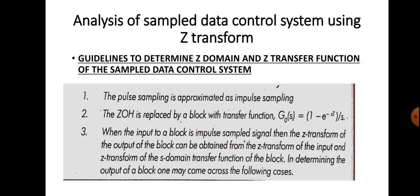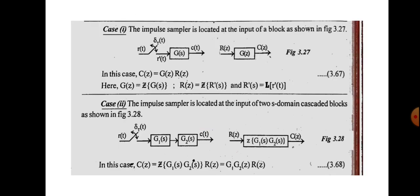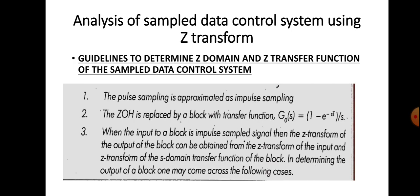This step will be clear when we go through three cases. The third guideline says that if the input is a sampled version, then the output of the block will be the product of the Z-transform of the sampled input and the Z-transform of the block transfer function. When the input to the block is an impulse-sampled signal, the Z-transform of the output can be obtained from the Z-transform of the input and the Z-transform of the s-domain transfer function.